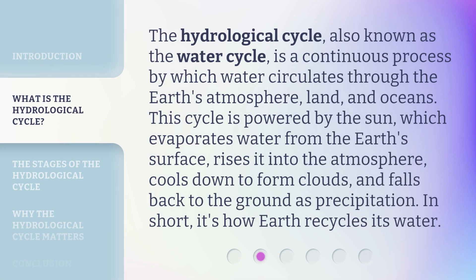The hydrological cycle, also known as the water cycle, is a continuous process by which water circulates through the Earth's atmosphere, land, and oceans. This cycle is powered by the sun, which evaporates water from the Earth's surface, rises it into the atmosphere, cools down to form clouds, and falls back to the ground as precipitation. In short, it's how Earth recycles its water.